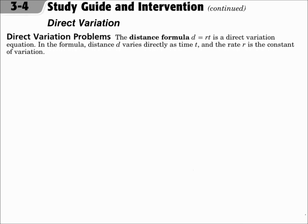Sometimes you can solve word problems with direct variation. These come in the form of one variable equaling another variable times a third variable — just like y equals kx. The distance formula works like this: d equals rt. It's a direct variation equation where distance varies directly as time, and the rate is the constant of variation.